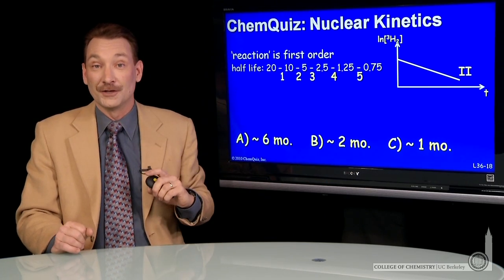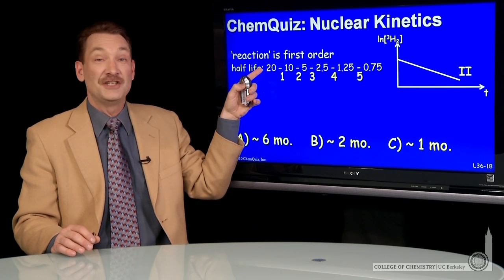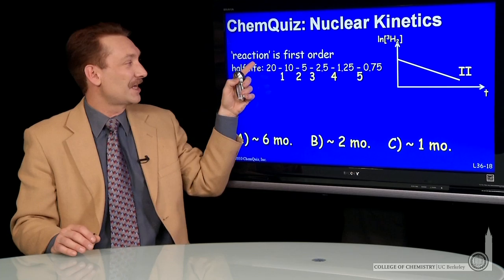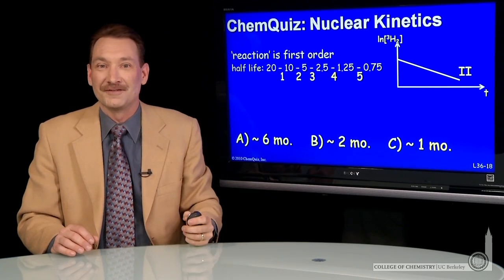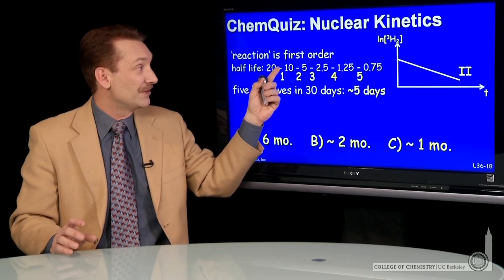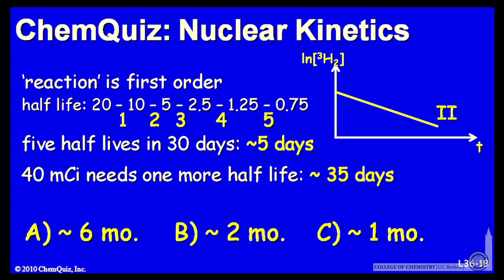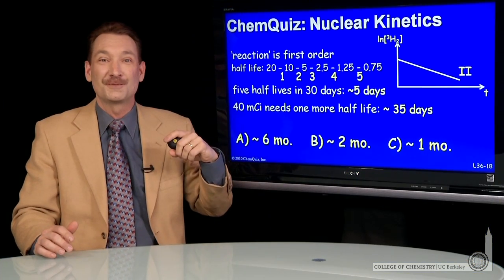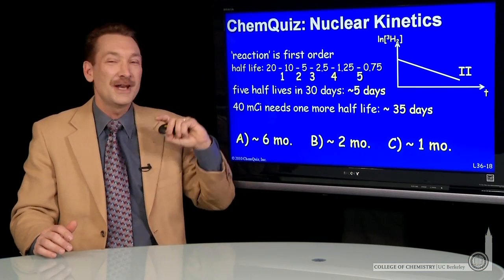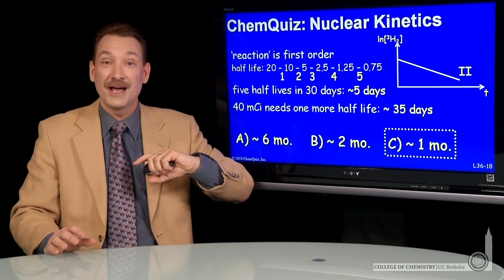What if you had a 40 millicurie exposure? You would just need one additional half-life, because you'd go from 40 to 20, and then those five half-lives — so just six half-lives total. Since five half-lives takes about 30 days, that's a half-life of around five days. So one more half-life for the 40 millicurie exposure is 35 days. Biologically, a 40 millicurie and a 20 millicurie exposure are removed from your body in about the same time — about a month.